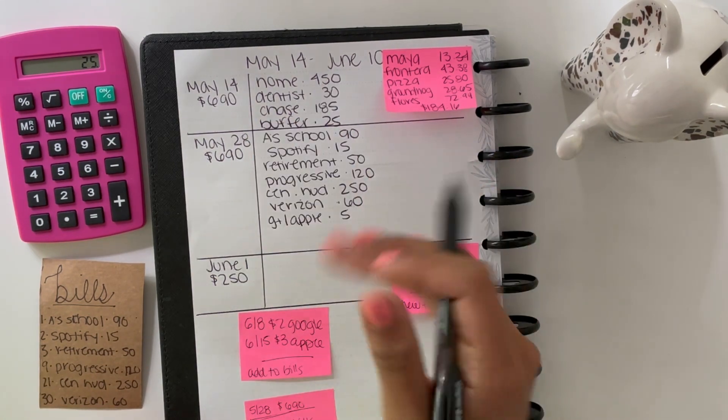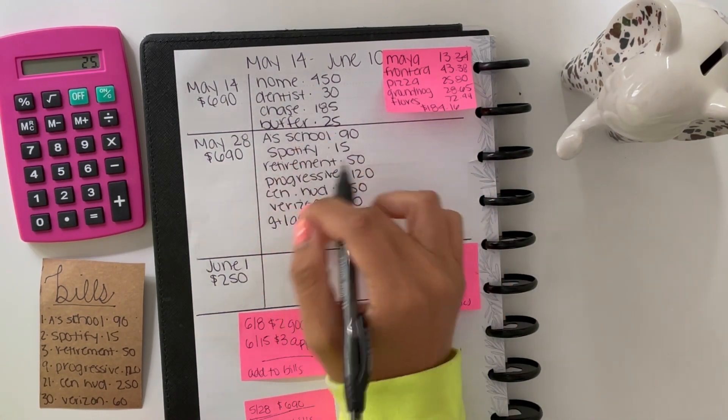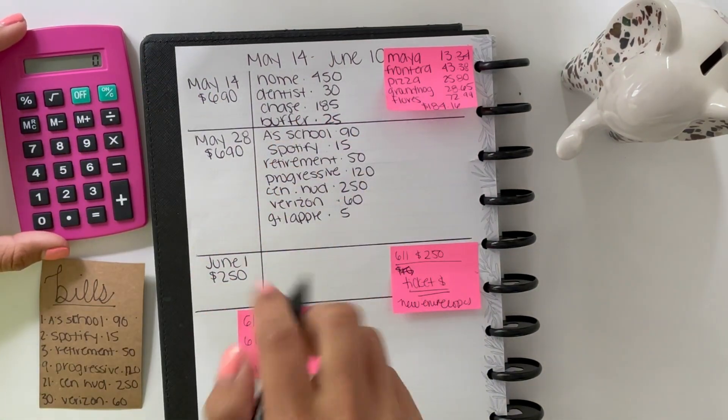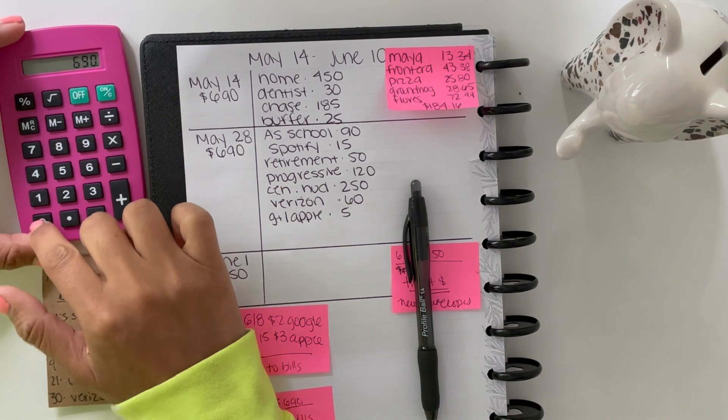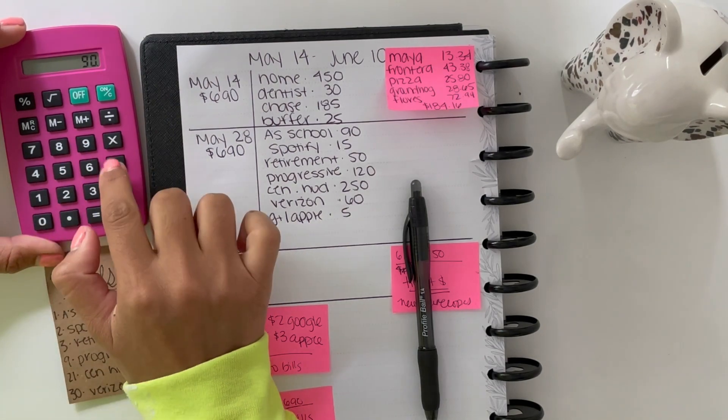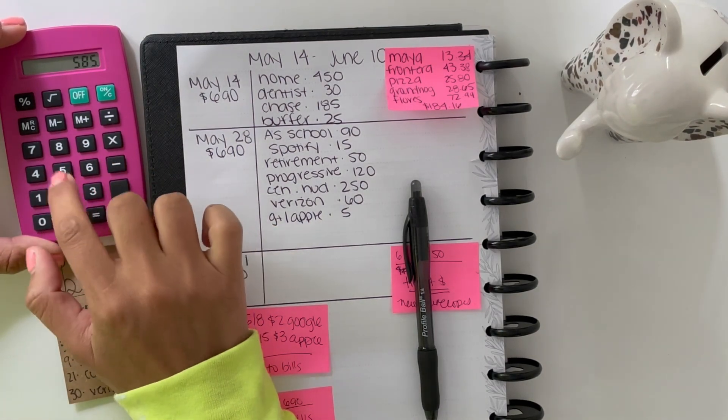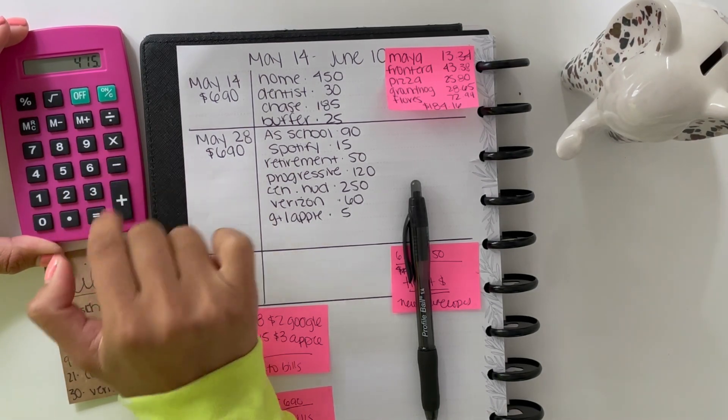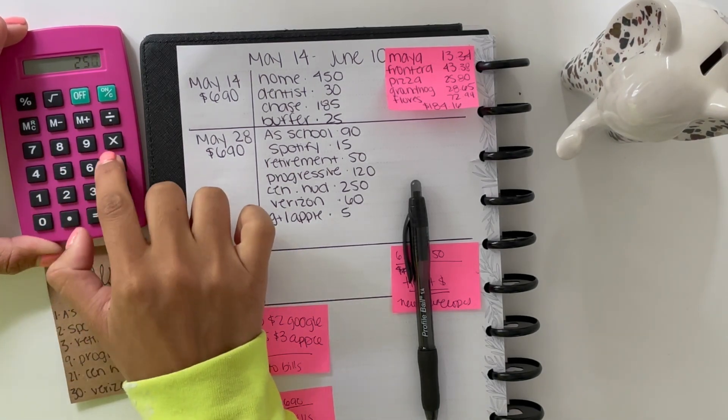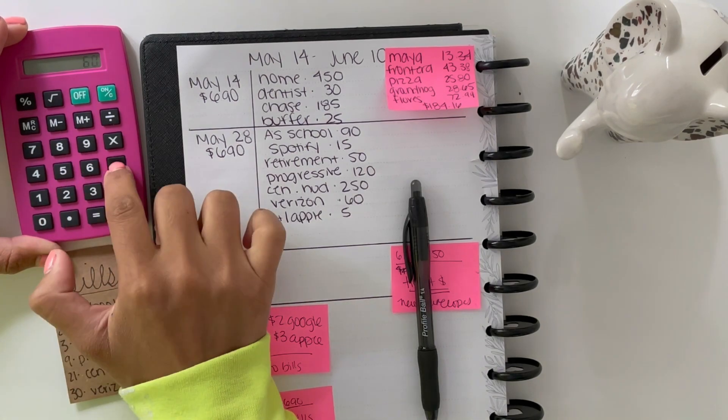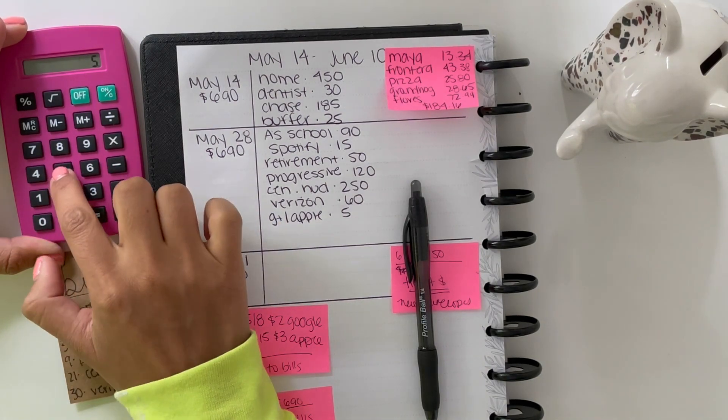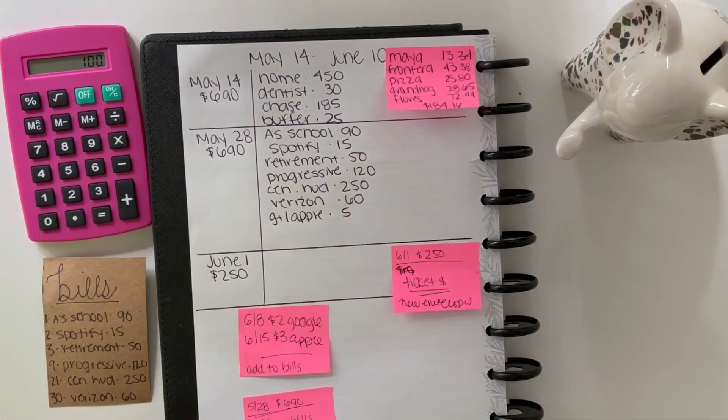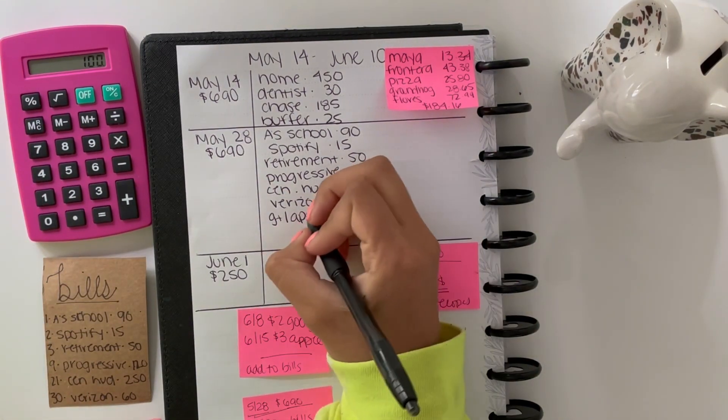For this May 28th, I have $690. All these bills equal $590. So $690 minus $90 for school, $15 for Spotify, $50 for retirement, $120 for Progressive, $250 for Central Hudson, $60 for Verizon, and then $5 for Google Plus and Apple. So that leaves me with $100.